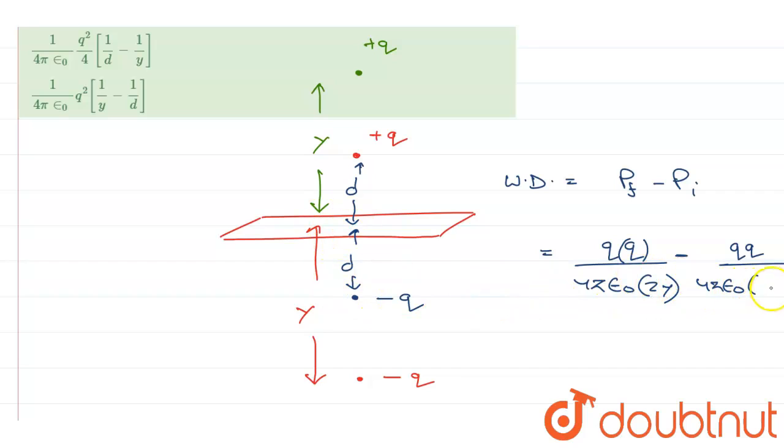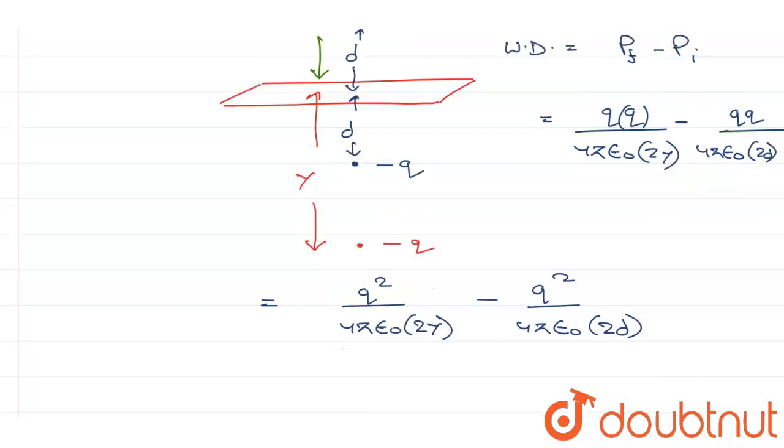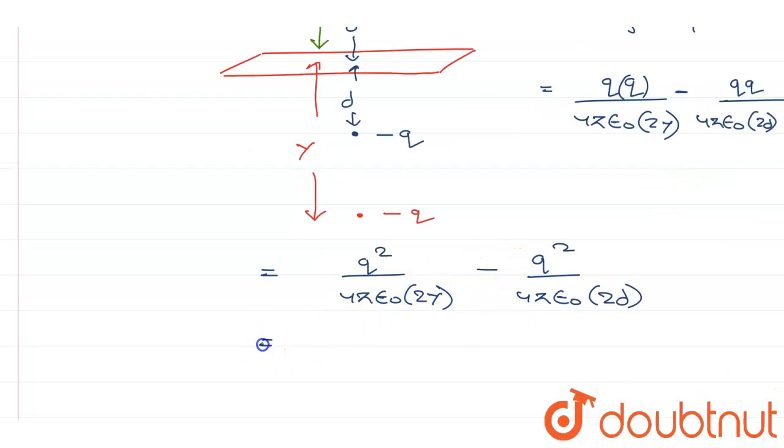Which is equal to q squared upon 4π epsilon naught. So I can take q squared by 4π epsilon naught common, so I get q squared by 4π epsilon naught, and 1 by 2 can also be taken common.